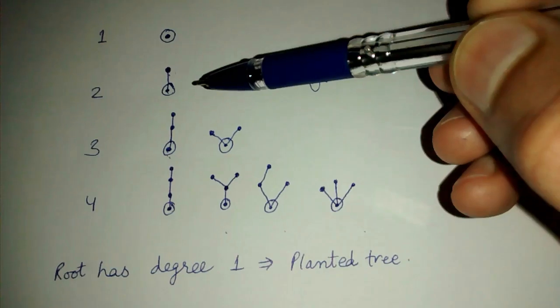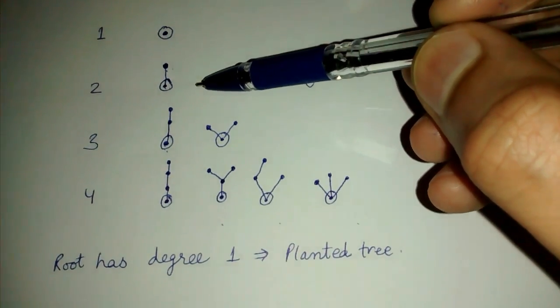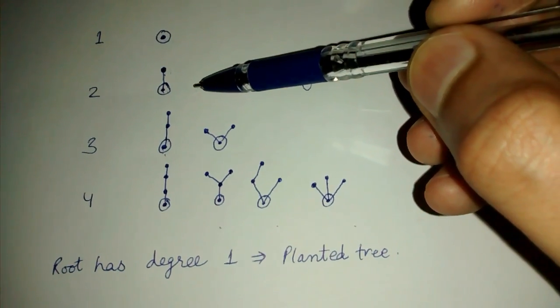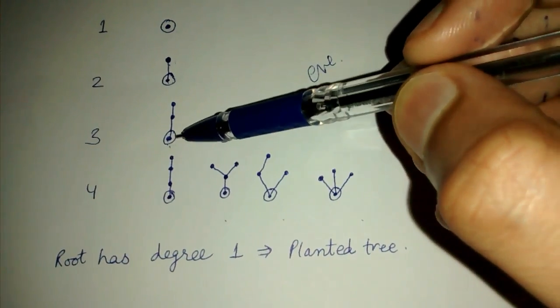So this one we can say is a planted tree because the root vertex has a degree of one. This is also a planted tree.